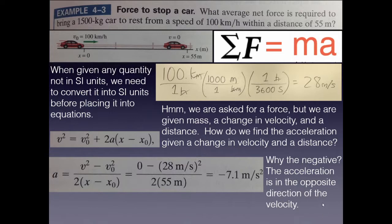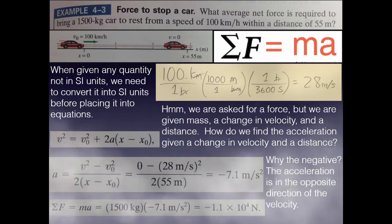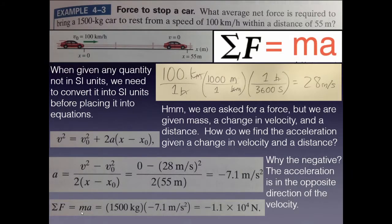So that means a negative force will result when I use sum of F equals MA. So I've got the mass, and now I have the acceleration, which is negative. When I multiply those two together, I get negative 1.1 times 10 to the 4 newtons. Remember, force is unit. Newtons, whenever you've got kilograms times meters per second squared, that is newtons for force. So it's a negative force since it also points backwards from the velocity.